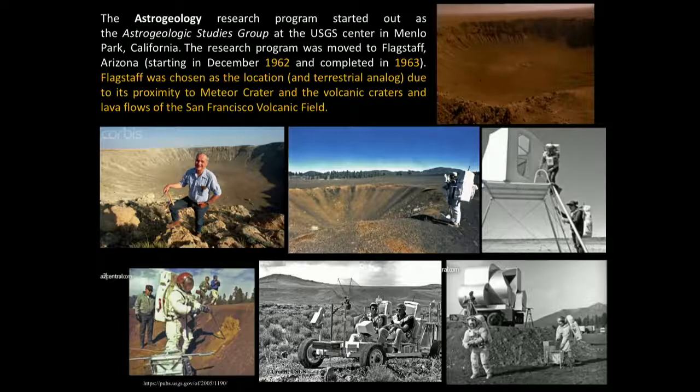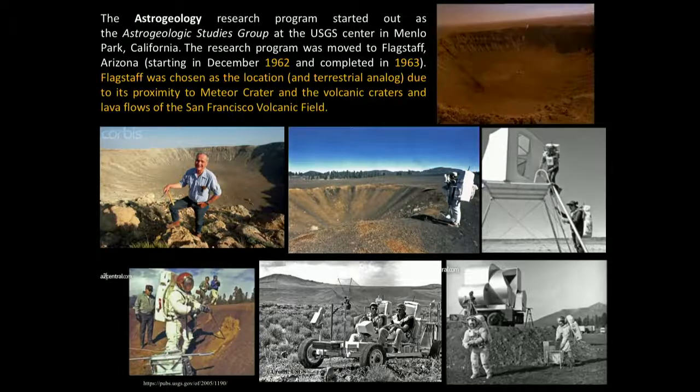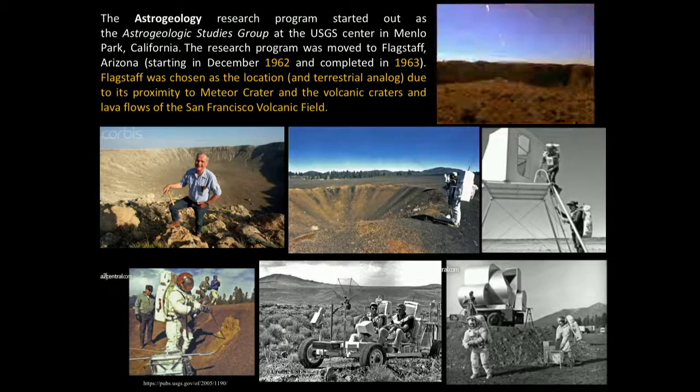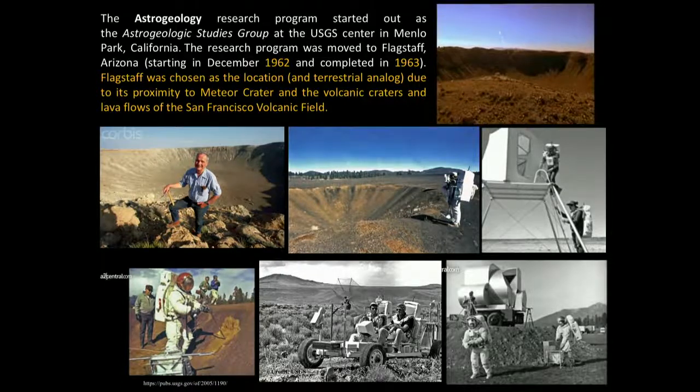Professor Shoemaker was working in the Barringer Meteor Crater in Arizona — the first structure identified as a cosmic structure, not without difficulties. All the studies related with planetary analogues were connected with the training of the astronauts for the Apollo mission. You can see the astronauts moving not only in the meteor crater but also in the volcanic craters and lava flows of the San Francisco volcanic field — what we are trying to do again now in Lanzarote after 50 years.